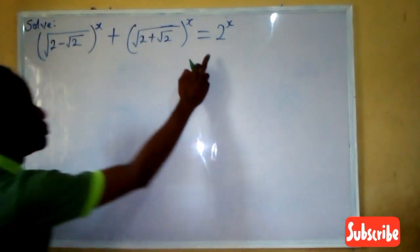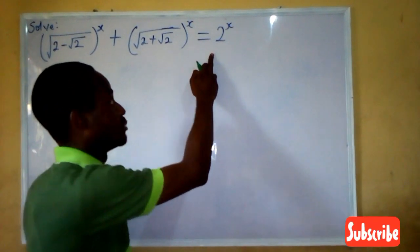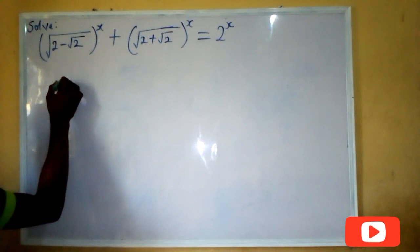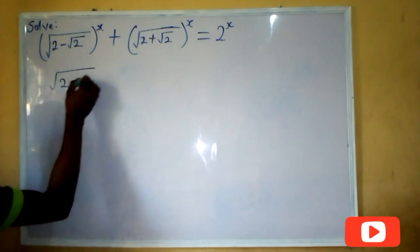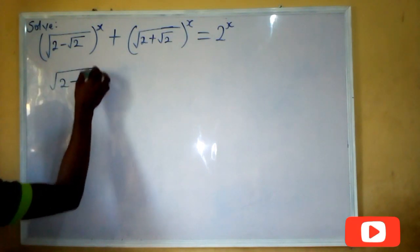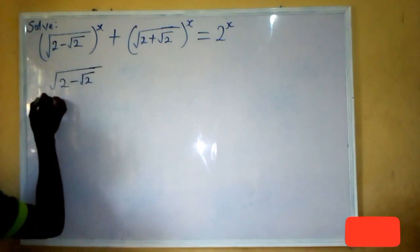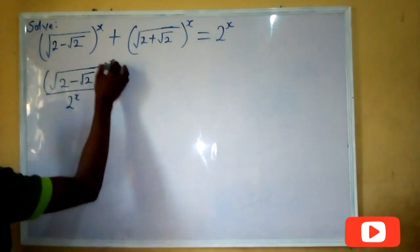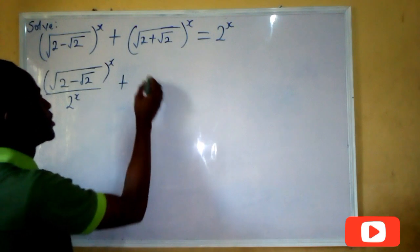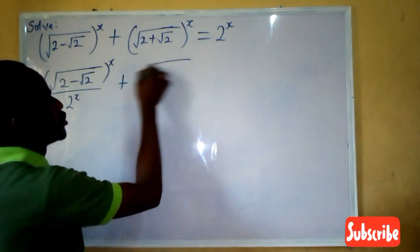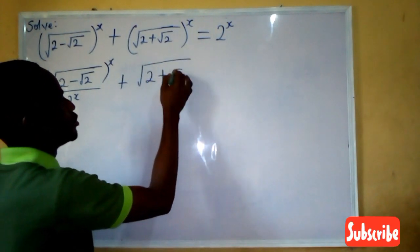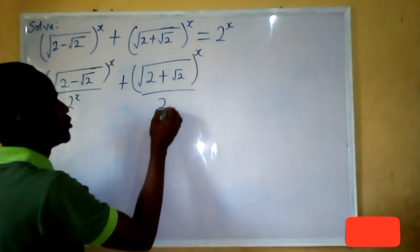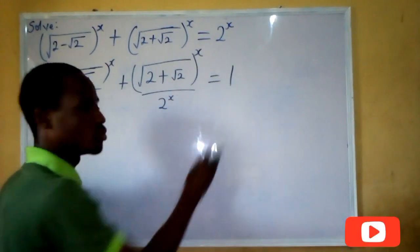Firstly, I want to divide both sides by 2 raised to power x. So if I do that, I'm going to have the root of 2 minus root 2, all over 2 raised to power x — and this is also raised to power x — plus the root of 2 plus root 2, all over 2 raised to power x. That gives us 1.